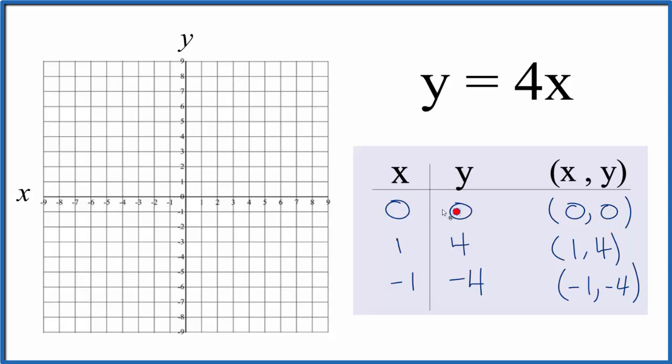Let's start off with x is zero and y is zero, so here's x is zero right here and it's also y is zero, so that's our first point. Now we can do x is one and y is four, so one two three four.